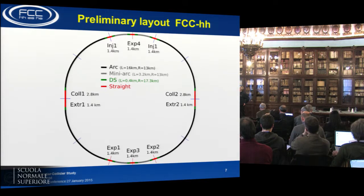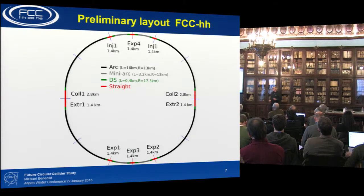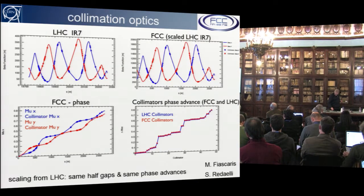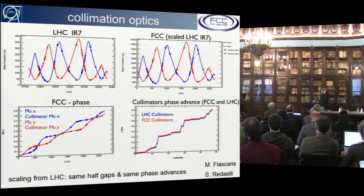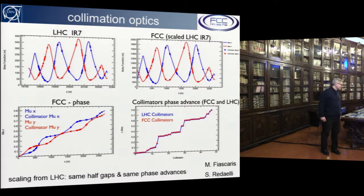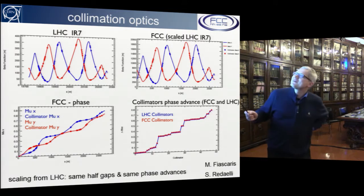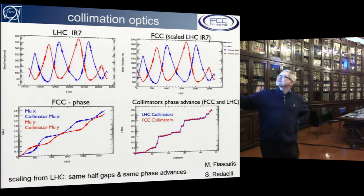The LHC is tangential to this point, and we can inject on either side of the main experiment. All straight sections are 1.4 kilometers long, except for the two collimation sections which are 4.2 kilometers each. The collimation optics assumes, perhaps conservatively, that the gaps of the collimators and beam sizes at collimator locations are unchanged from the LHC — meaning we need much larger beta functions. The phase advances between collimators are the same as in the LHC.